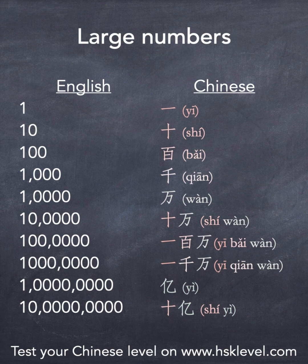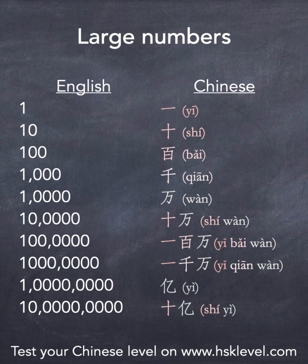When we get to one hundred million, one hundred million is ten thousand ten-thousands. So, exactly like in English where we don't say one thousand thousands but use the new word million, here in Chinese we do not say wàn wàn, but we have a new character which is yì. Note that this is a fourth-tone yì, not to be confused with first-tone yī meaning one.